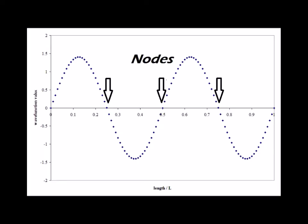Here is the solution for n equals 4 with the three nodes clearly labeled. Note that for any wave function solution, there will be n minus 1 nodes.